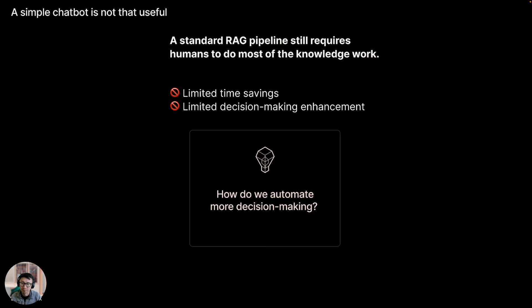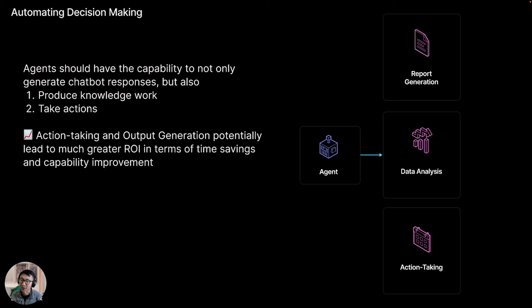The question we ask ourselves is how do we automate more decision making and actually create knowledge-powered agents that can produce reliable, consistent outputs for end users and make them basically supercharged — able to do a lot more in a shorter amount of time. The answer is, of course, something around agents. There's a lot of hype around building agentic applications these days, especially with state-of-the-art models getting better at multi-step reasoning. Knowledge assistant agents should have the capability to not only generate simple chatbot responses, but also produce entire units of knowledge work — like an entire PDF or slide deck — and take actions, automating routine tasks. This overall pattern of multi-step reasoning, action taking, and output generation can potentially lead to much greater ROI in time savings and capability improvements.